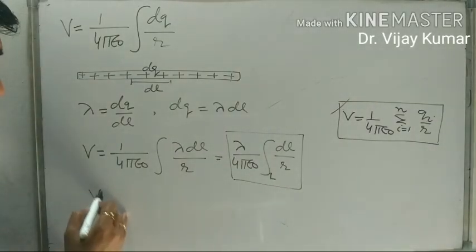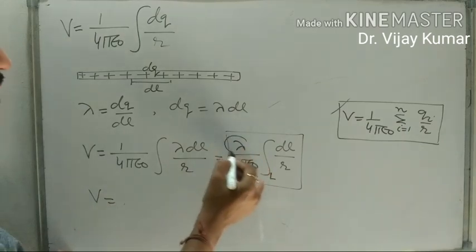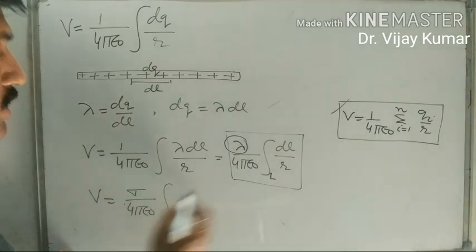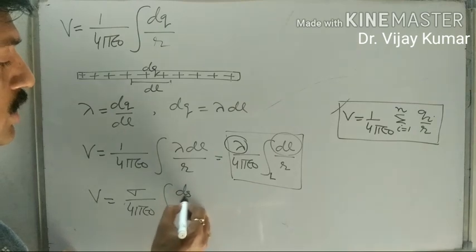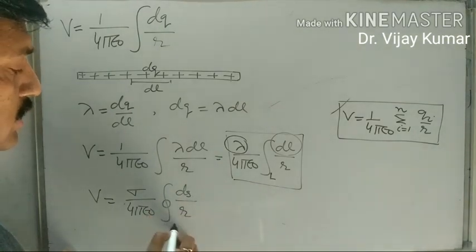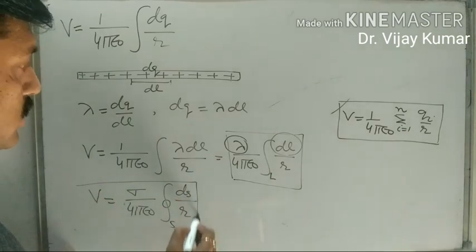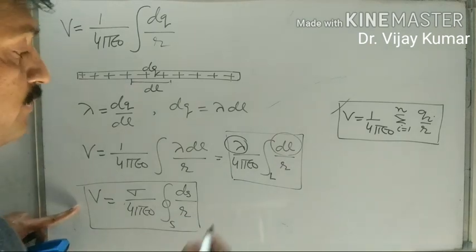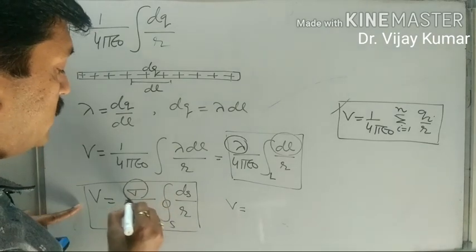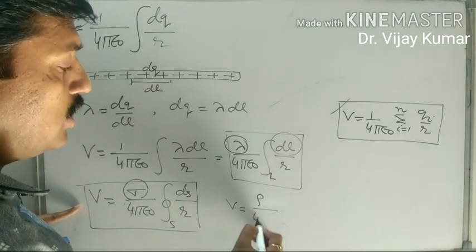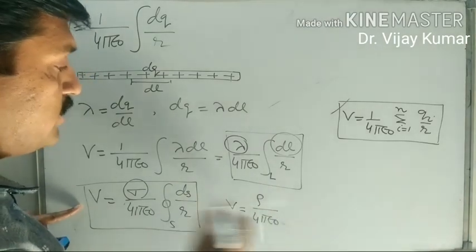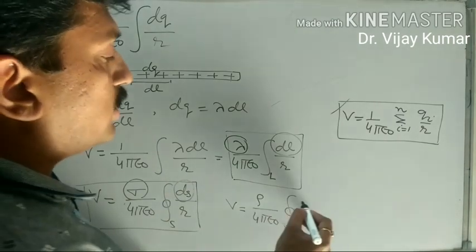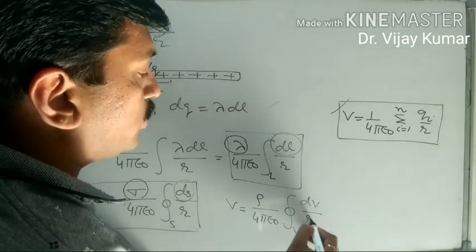When charge distribution is two-dimensional, the linear charge distribution converts into surface charge distribution: V equals 1 upon 4 pi epsilon naught, integration of sigma dA upon R, where dA is a small surface area. For three-dimensional charge distribution, the surface charge density converts into volume charge density: V equals 1 upon 4 pi epsilon naught, volume integration of rho dV upon R.